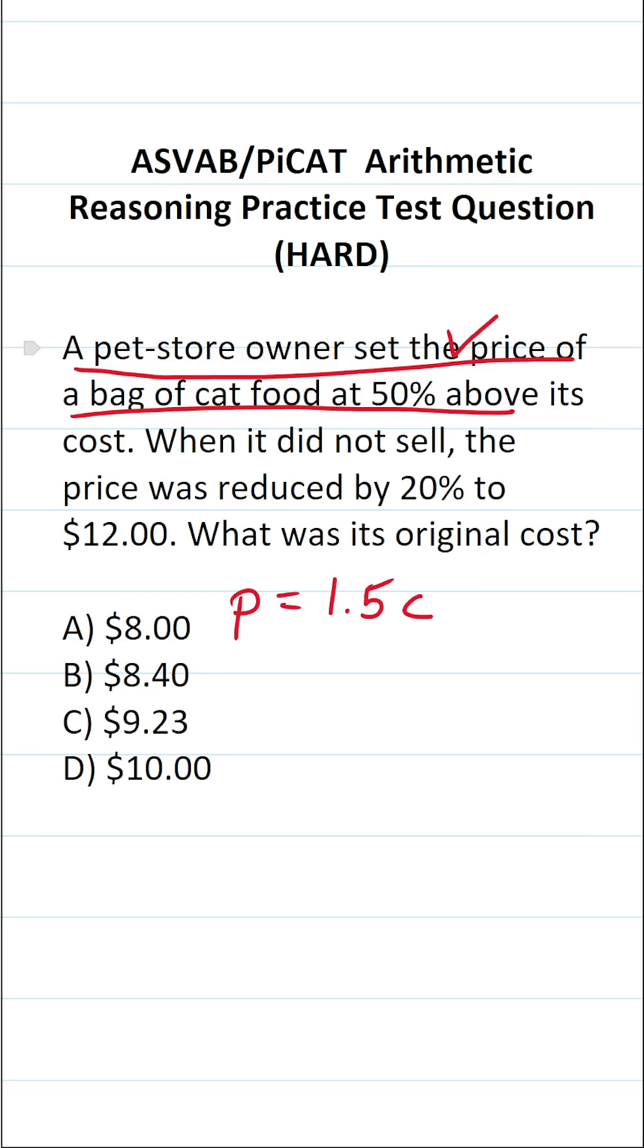Let's take a look at the next two statements. When it did not sell, the price was reduced by 20% to $12. So we know the price is reduced to $12, and it was reduced by 20%. Again, we're going to be solving for C here.